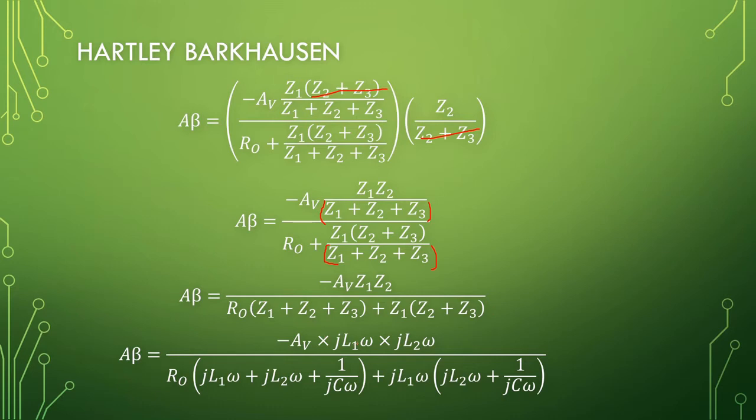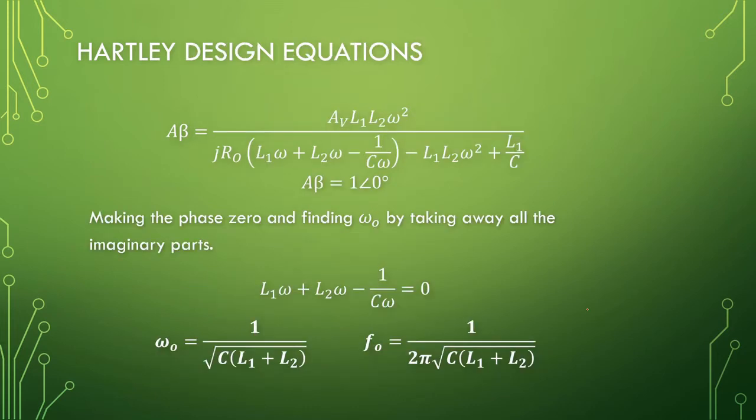Now we can insert our inductors and capacitors and we will be left with our imaginary terms here with our unknown output impedance of our amplifier. So this L1 omega, L2 omega, and 1 over C omega is going to give us our resonant frequency and the rest will determine our gain.